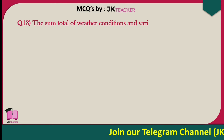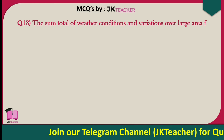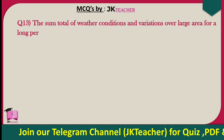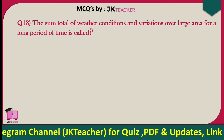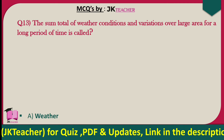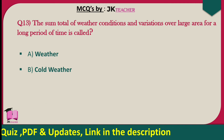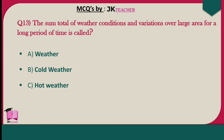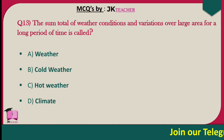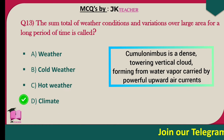The sum total of weather conditions and variations over a large area for a long period of time is called — options are weather, cold weather, hot weather, and climate. The right answer is option C — climate.